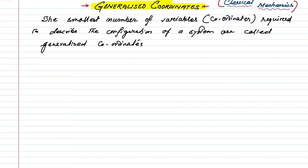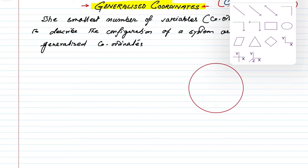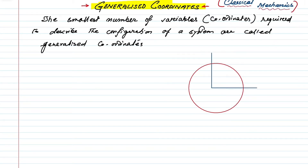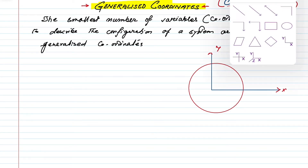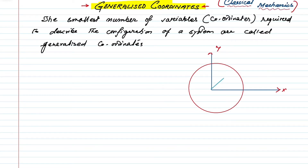Suppose we have a particle moving in a circular path in the x-y plane. We have imposed conditions — that means constraints — on the motion of this particle. This is the x coordinate, this is the y coordinate, and here r is the radius of the circle which is fixed. This particle is moving in the circular path, and this angle is theta. To describe its position we need two coordinates x and y.